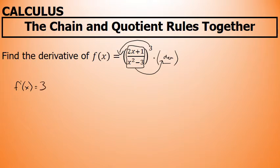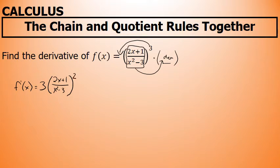I'm going to be moving the exponent to the front. The 2x plus 1 over x squared minus 3 is unchanged in this part of the problem. I'll decrease the power by 1, and then multiply by the derivative of the inside of the quantity — the derivative of what was originally raised to the third power, which in this case is 2x plus 1 over x squared minus 3. That derivative requires the quotient rule.